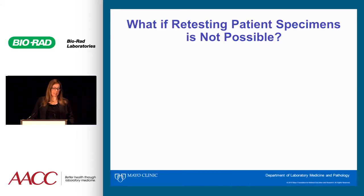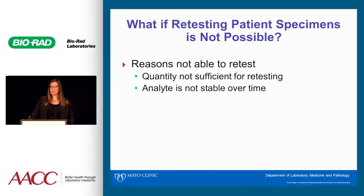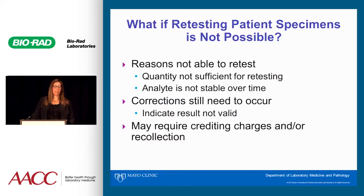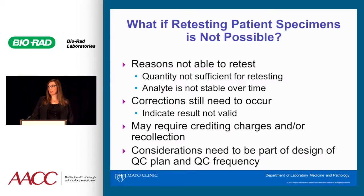What if retesting patient specimens isn't possible? The reasons might be insufficient quantity for retesting or analyte instability over time. We still need to treat these as errors — out-of-control conditions with erroneous results. Corrections still need to occur, and in the electronic medical record it should be documented that the result is not valid. You can note that routine quality assurance processes detected an issue and therefore the result is not valid. Depending on your institution's policies, you may need to credit the charge or order a recollection, and these considerations need to be part of the QC plan and QC frequency.